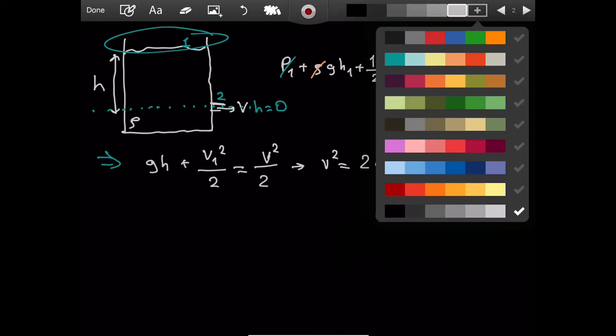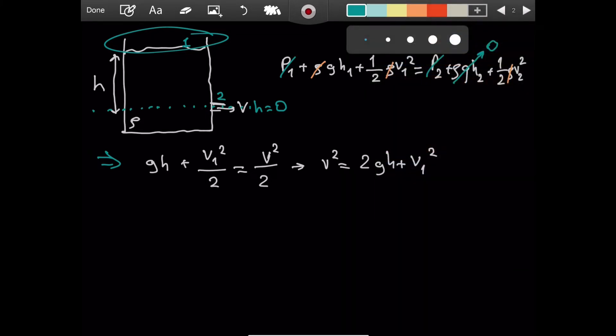Here we will make an approximation. Notice that since the cross section of the top is much, much greater than the cross section of the hole, v1 will be much, much smaller than v. Because think of it like this: when a tiny amount of height changes from the top, a drastic amount of water should come out of the pipe. So from the hole, the water exits very quickly, but the height doesn't change that much. This is why v1 is much, much smaller than v, v2.